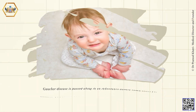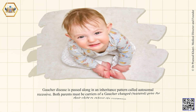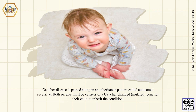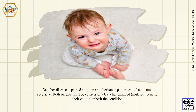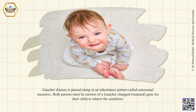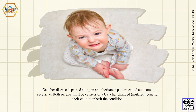Gaucher disease is passed along in an inheritance pattern called autosomal recessive. Both parents must be carriers of a Gaucher changed or mutated gene for their child to inherit the condition.